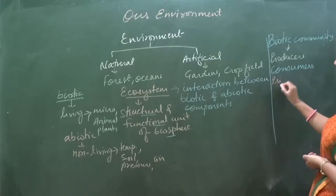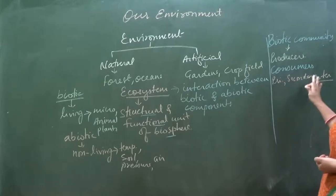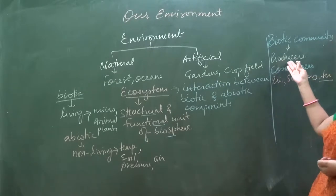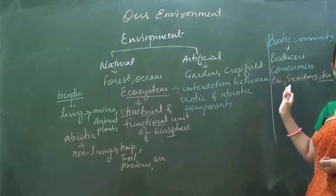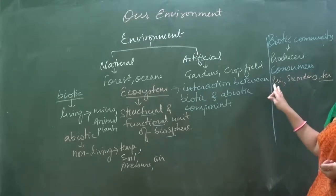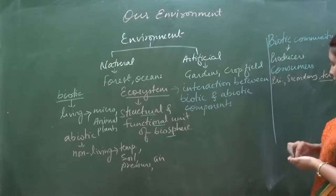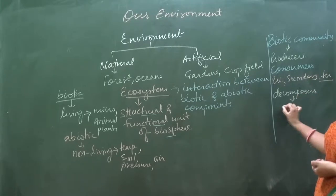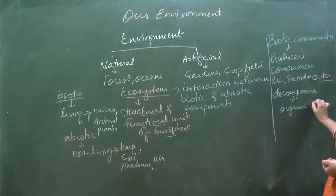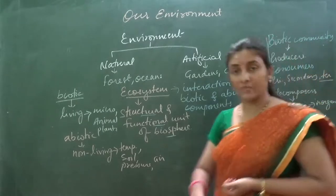Consumers can be directly or indirectly dependent on producers for nutrition. For example, the goat (primary consumer) is directly dependent on plants. The lion eats the goat — it is a herbivore — so it is indirectly dependent on plants. Lastly, decomposers convert organic matter to inorganic matter with the help of microorganisms like bacteria and fungi, feeding on dead and decaying matter. This is what we learned yesterday.